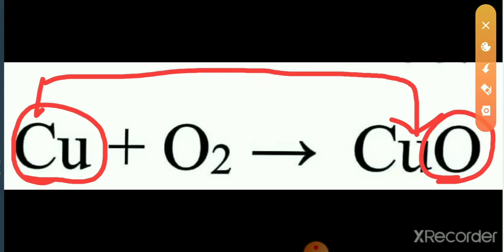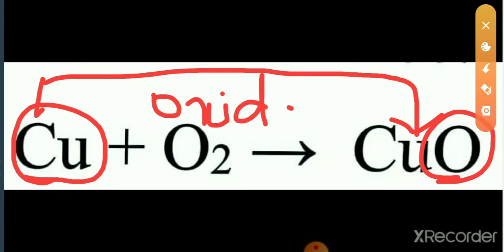We can say that copper gains oxygen. Then we can say that in this equation, copper is oxidized — oxidation takes place here.